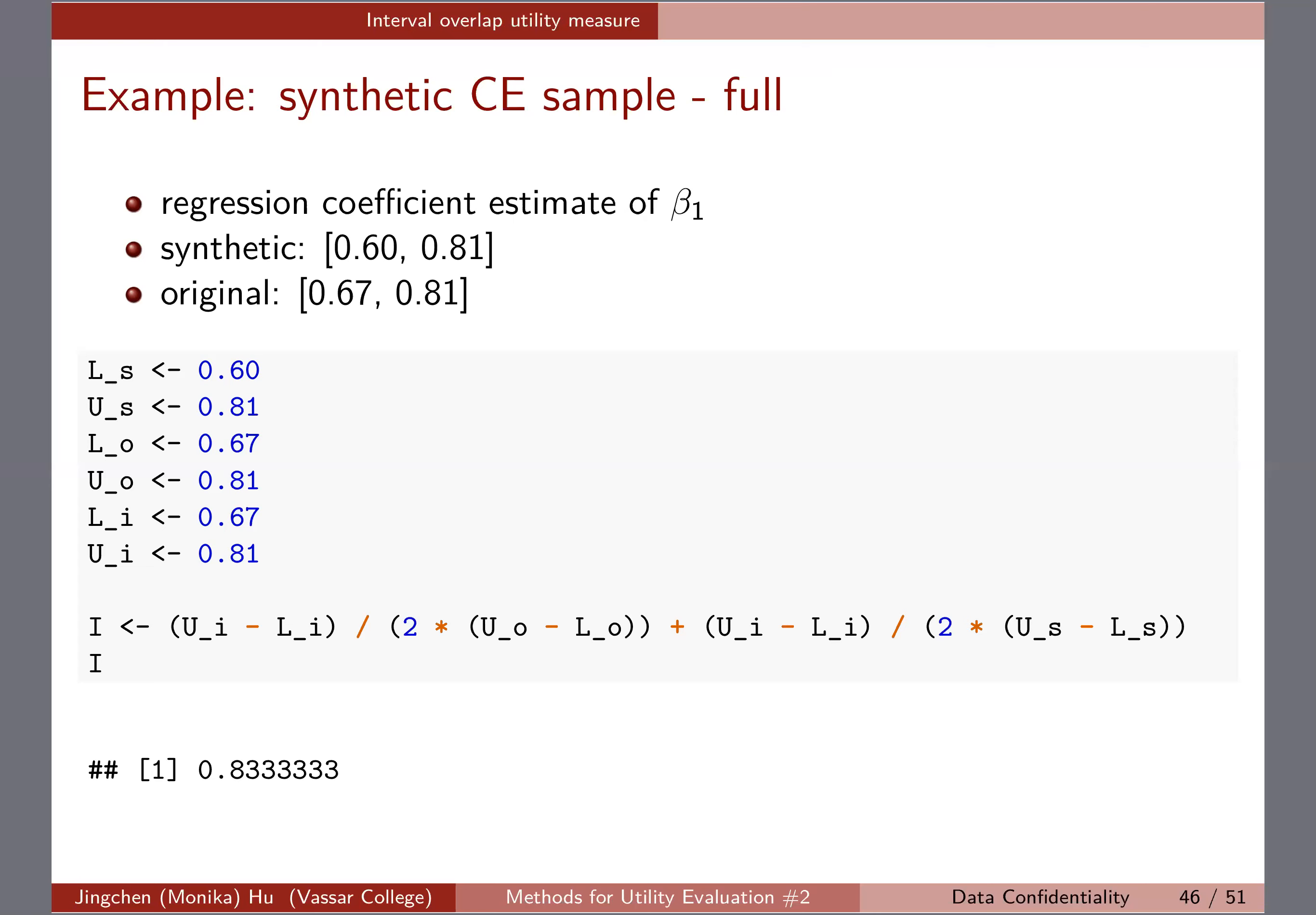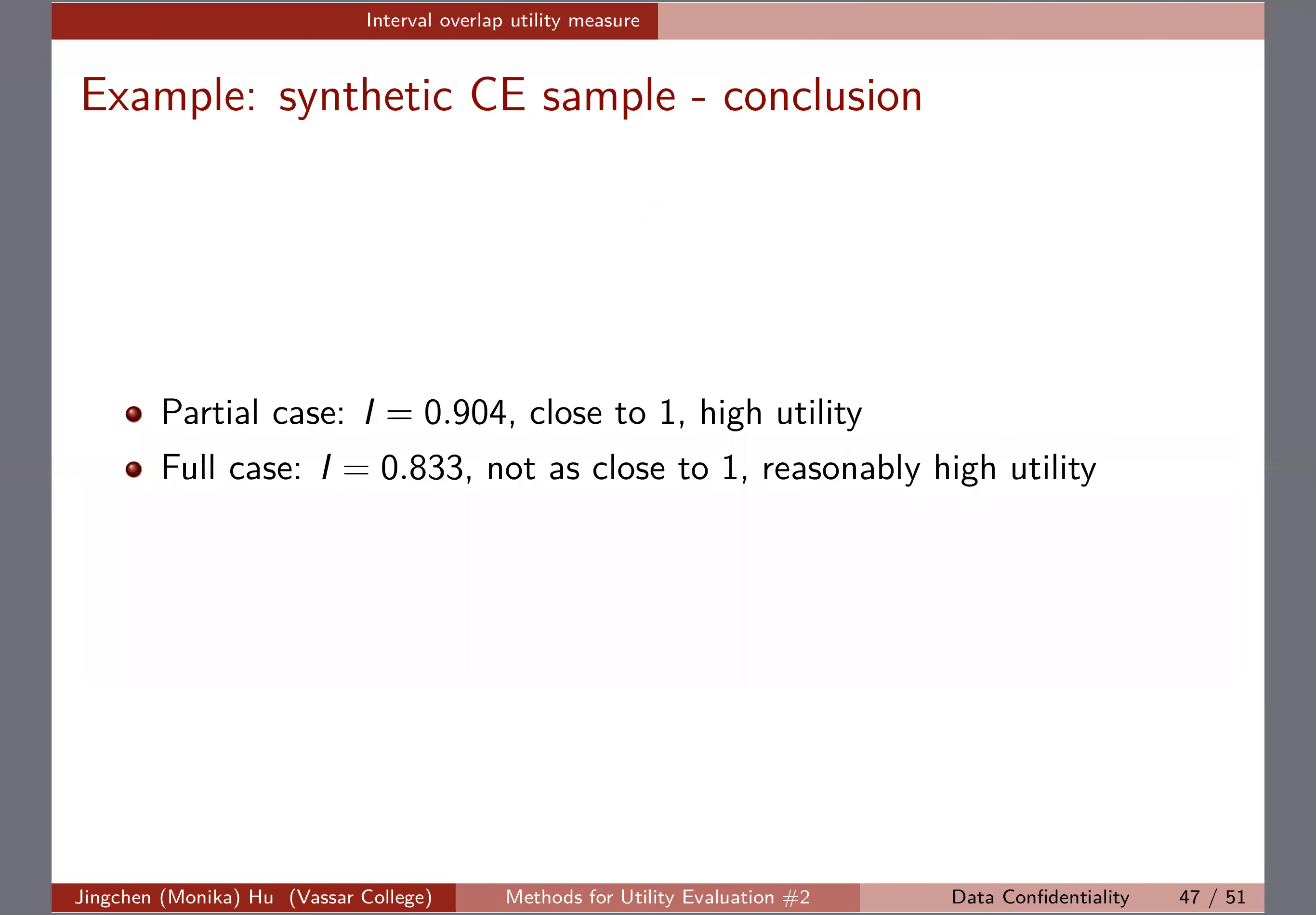Whenever you're doing confidence interval estimation, you can always use this interval overlap. This will be a very useful analysis-specific utility measure that you can have for your model. Each could be a point estimate like mean, et cetera, but it could also be for regression analysis. As long as you're dealing with some kind of numerical variable, this type of analysis-specific thing will be very common.